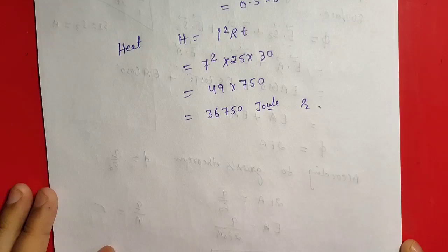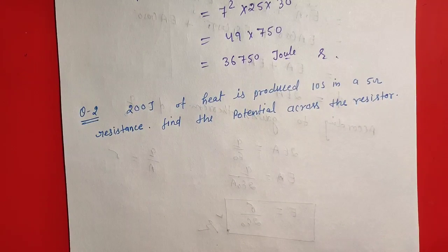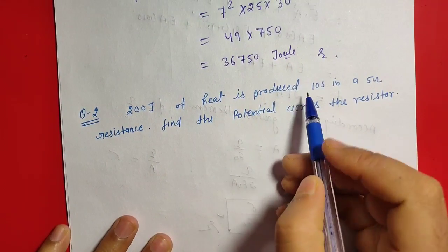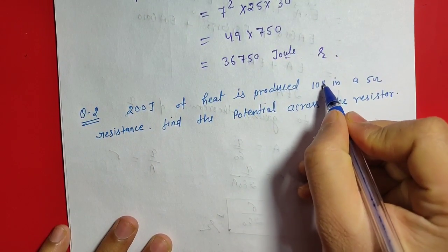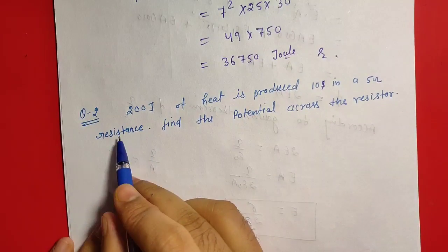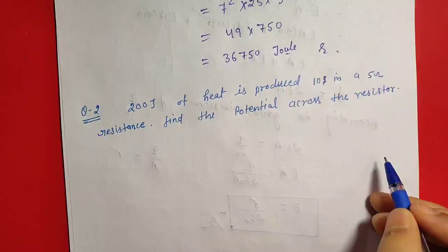Now second question. Second question is: 200 Joule of heat is produced in 10 seconds in a 5 ohm resistor. Find the potential across the resistor.